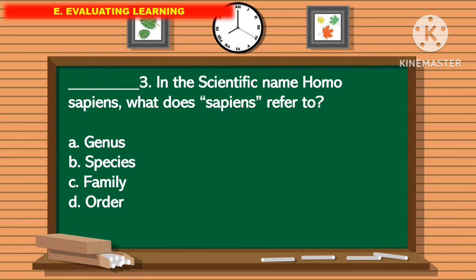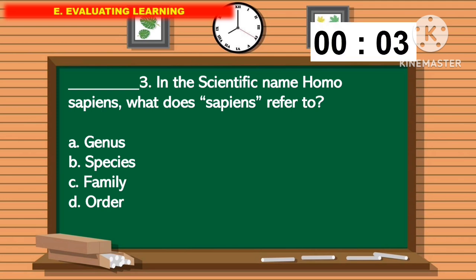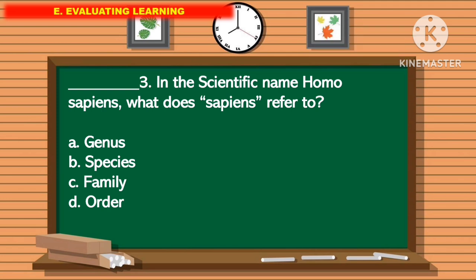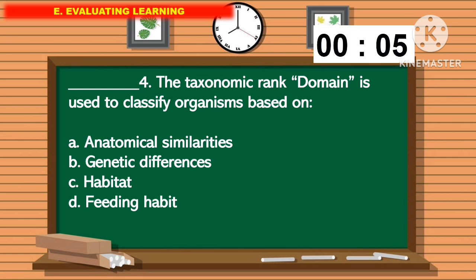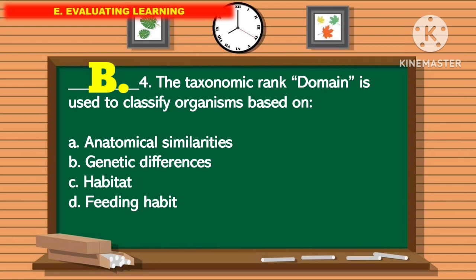For question number 3: in the scientific name Homo sapiens, what does sapiens refer to? The correct answer is letter B. For question number 4: the taxonomic rank domain is used to classify organisms based on? The correct answer is letter B.